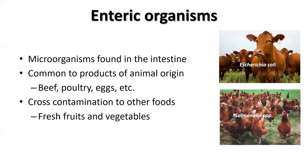Organisms that cause foodborne infection are what we call enteric organisms. These are microorganisms typically found in the gastrointestinal tract of humans and animals. As such, these microorganisms are often associated with products of animal origin such as beef, poultry, pork, and eggs. However, other types of foods can easily be cross-contaminated, and this cross-contamination can occur anywhere from the field to the fork.